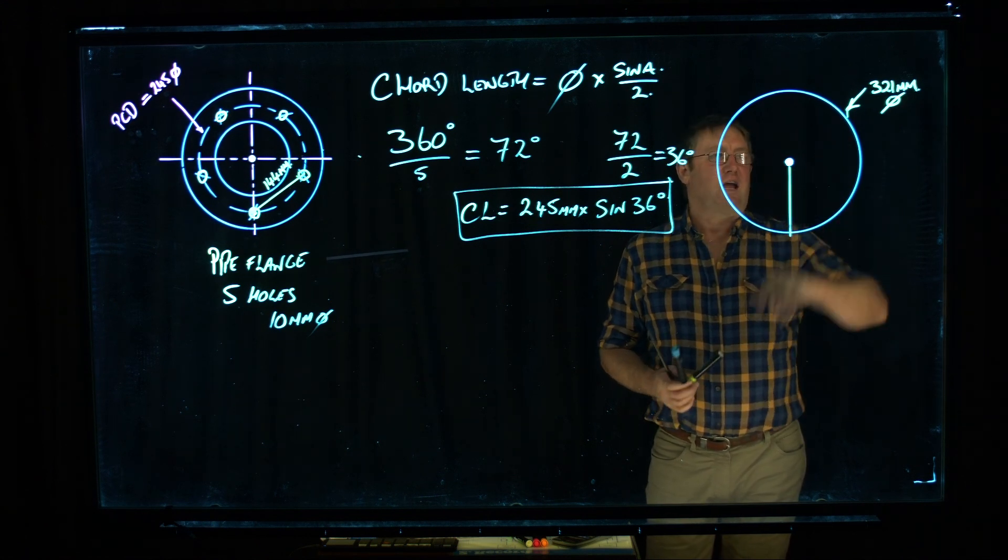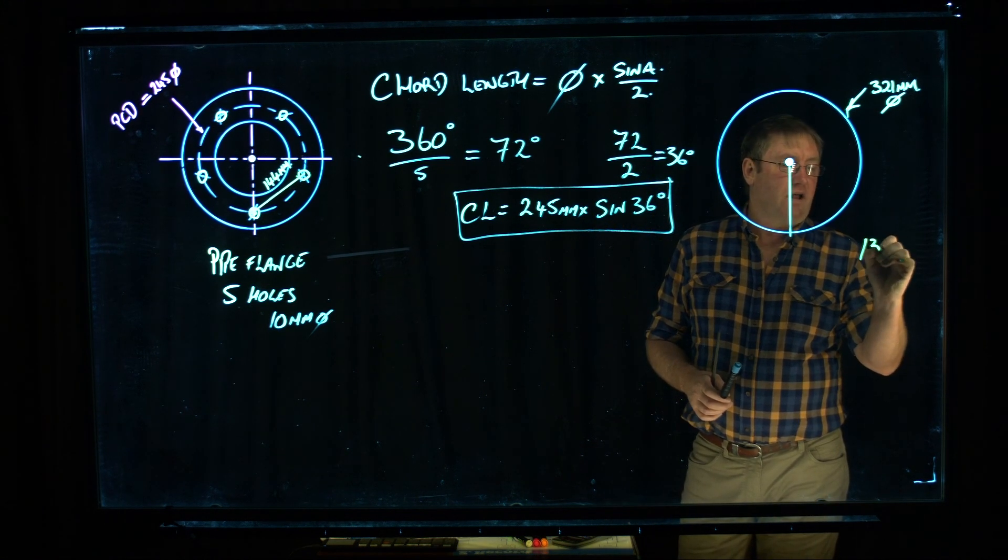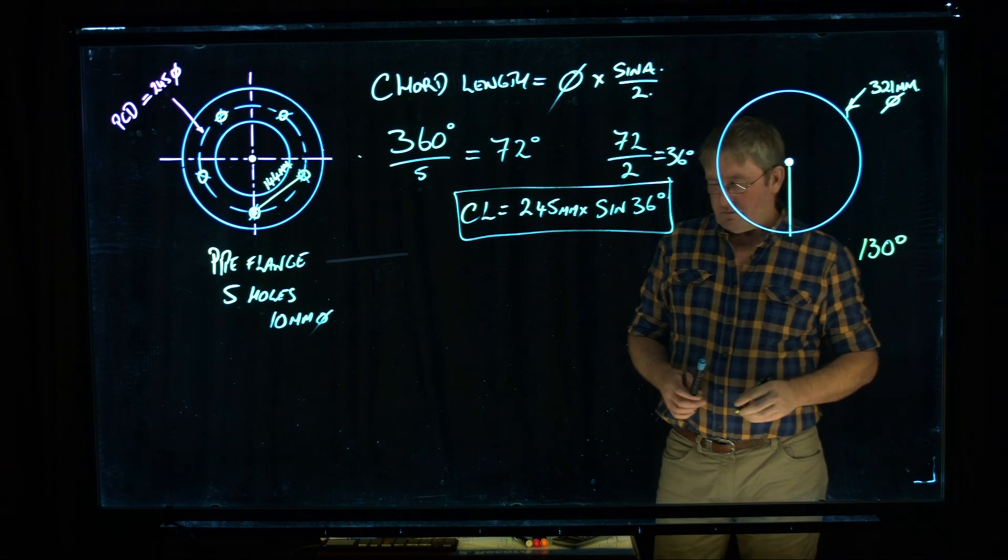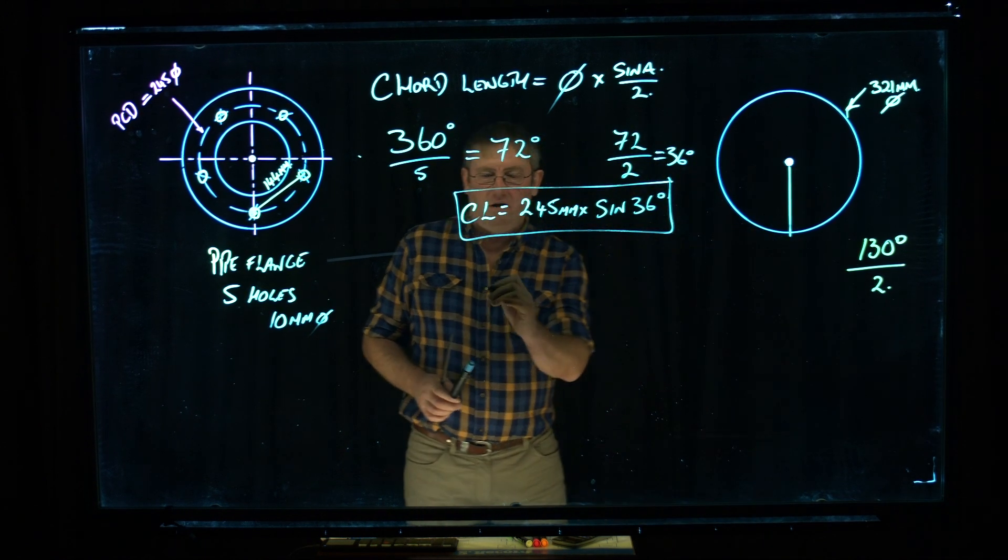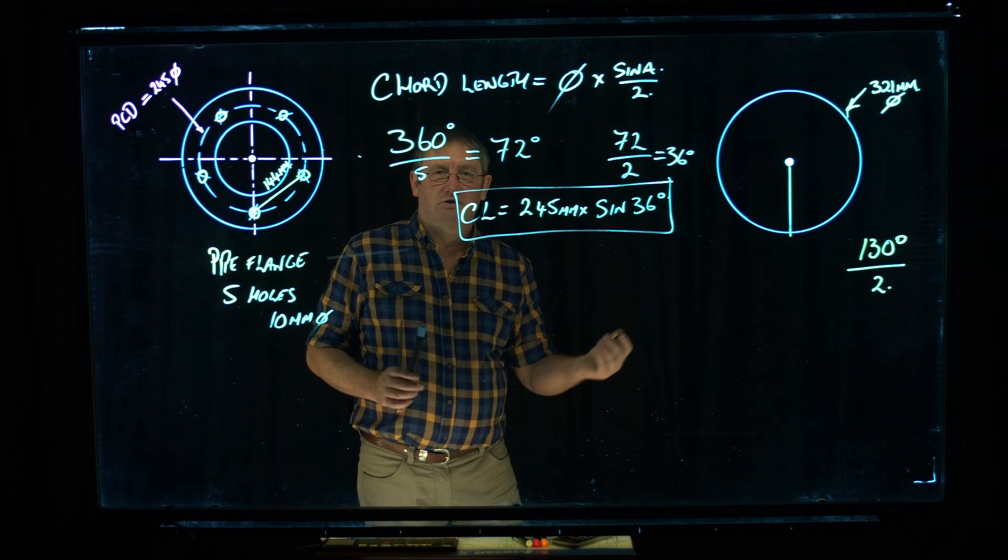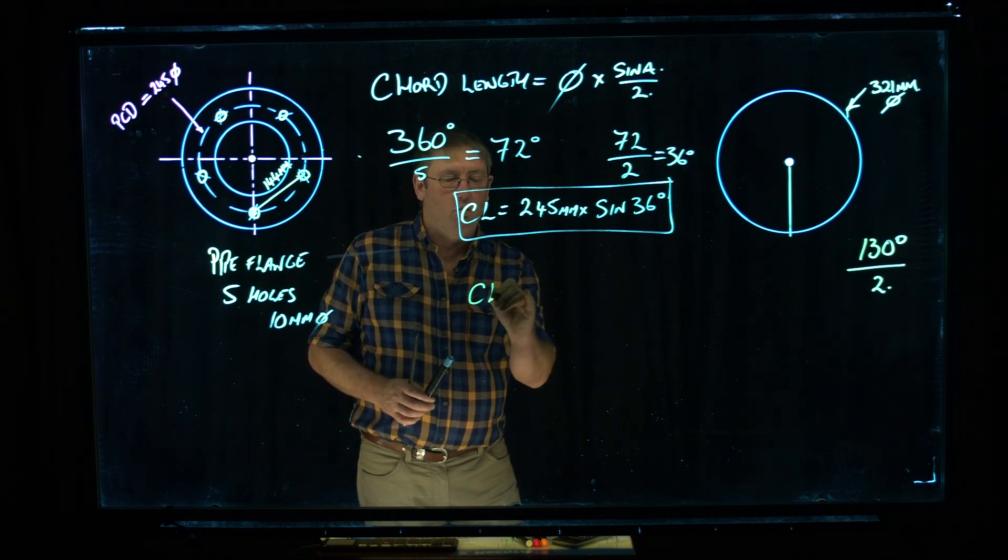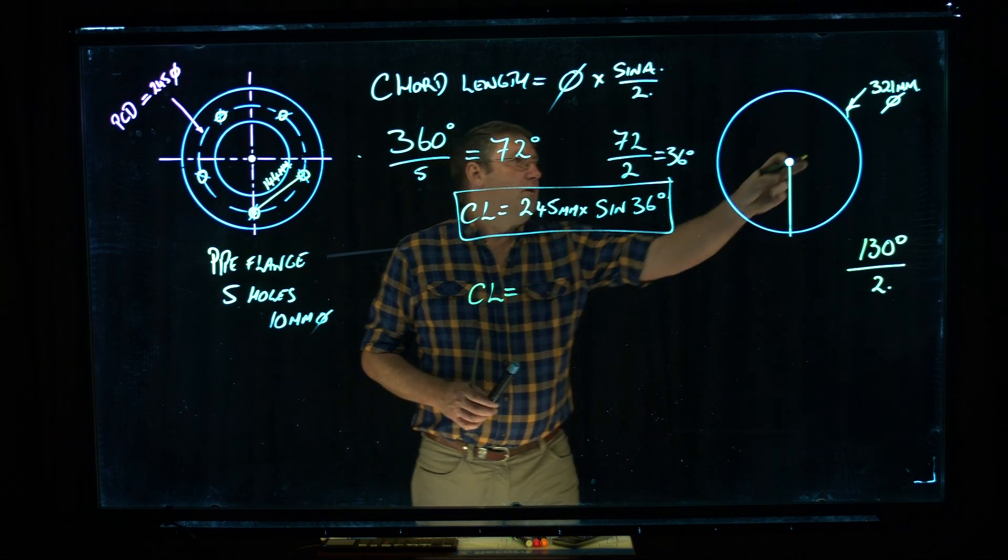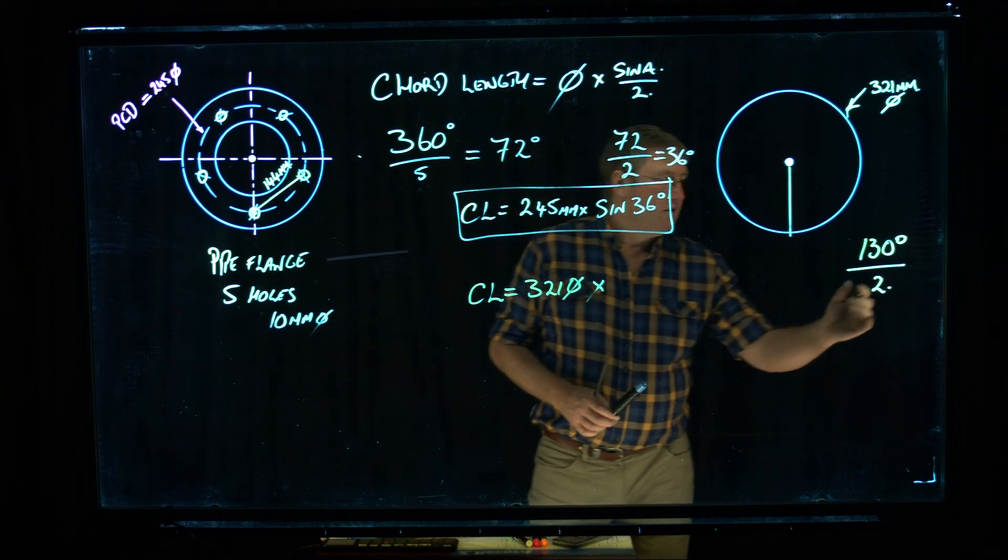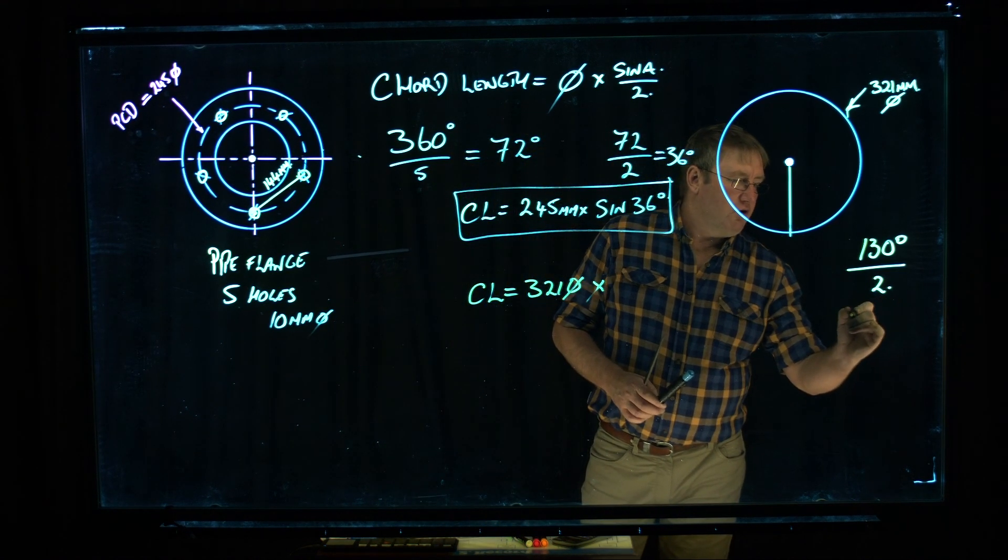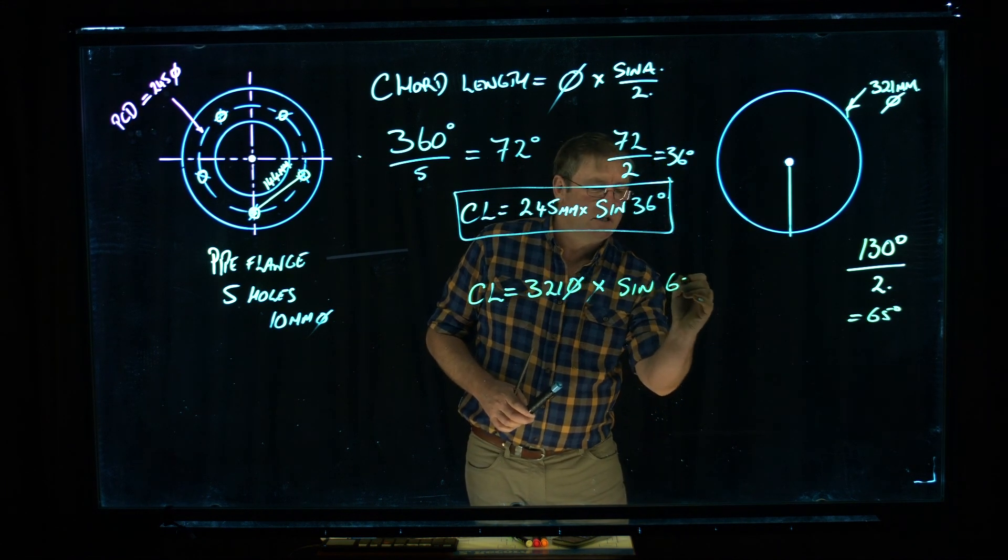And let's say I want to put an angle on here of, just make it up, 130 degrees. So the first thing I'm going to do is divide that by 2. So into my formula, I just dropped the protractor, let's not worry about it. So into the formula, it's going to be chord length equals 321mm diameter times 130 divided by 2 equals 65 degrees. So it's going to be sine 65 degrees.